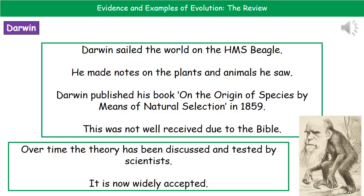His book wasn't received well. The reason behind the negativity towards his ideas was down to the very strong religious beliefs of the population at that time, because what Darwin was saying was completely opposite to what the Bible said. As a result, there was a lot of mocking of Charles Darwin. The picture in the bottom right is one they actually published in the newspapers, mocking him by putting his head on the body of an ape.